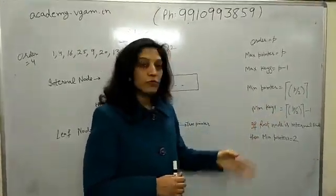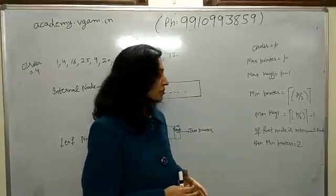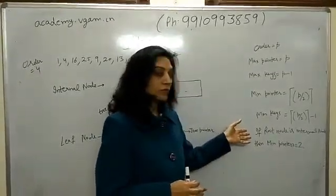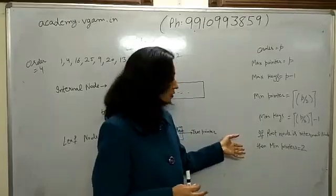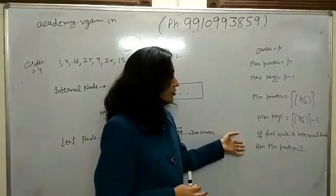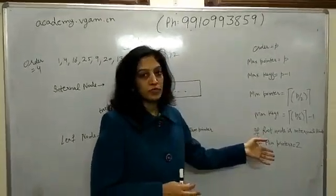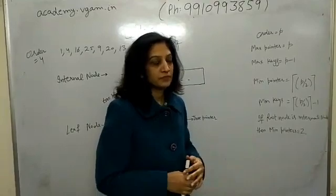If the root node is the only node, then there would be no pointers. But if it is also acting as an internal node, then minimum pointers are 2, irrespective of the order.